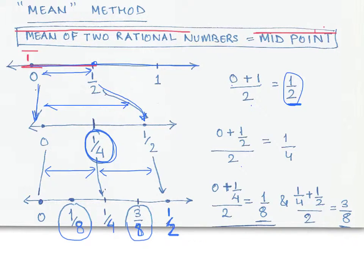So again if I want to find out the midpoint between 0 and 1 by 4, what do I do? We simply add 0 plus 1 by 4, that's the distance, and you divide it by 2. So when you do 0 plus 1 by 4 divided by 2, 1 by 4 divided by 2 gives you 1 by 8.